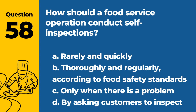Question 58. How should a food service operation conduct self-inspections? a. Rarely and quickly. b. Thoroughly and regularly, according to food safety standards. c. Only when there is a problem. d. By asking customers to inspect. Answer: b. Thoroughly and regularly, according to food safety standards. Regular self-inspections help maintain consistent food safety practices.